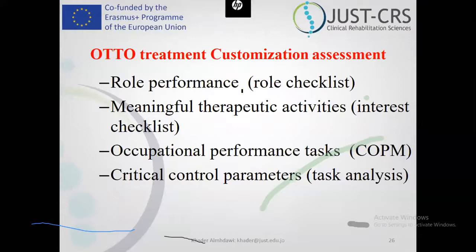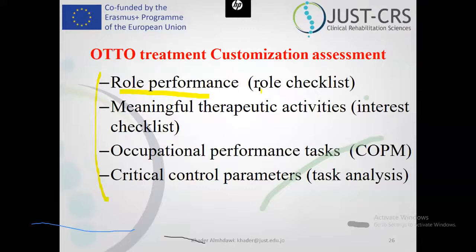The area responsible for the affected hand will get slower, less responsive, and smaller. Learned non-use is bad because patients will not move their hands. The best treatment is to engage the affected hand in daily life activities. Learned non-use should be broken because it leads to disuse — bad biomechanical consequences like weakness and shortening — and bad neuroplastic changes. Back to assessments: the obligatory or fixed assessments are role performance, meaningful therapeutic activity interest checklist, occupational performance tasks through COPM, and critical control parameters through task analysis.